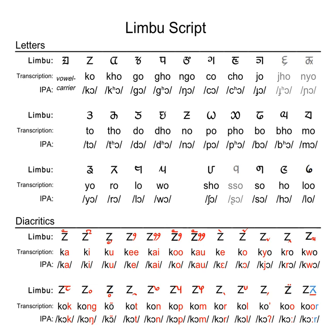According to traditional histories, the Limba script was first invented in the late 9th century by King Sirijunga Heng, then fell out of use, to be reintroduced in the 18th century by Te Ongzi Sirijunga Shin Tebe. Teaching of the Limba script was outlawed by the monarchy in Sikkim, as it posed a threat to the monarchy.